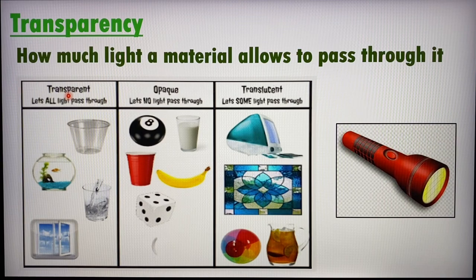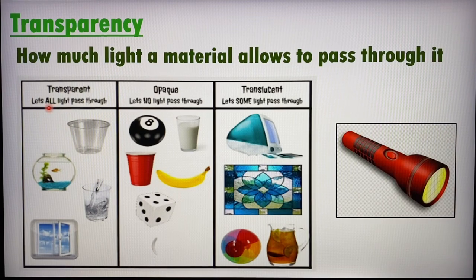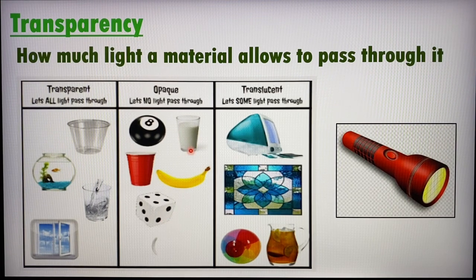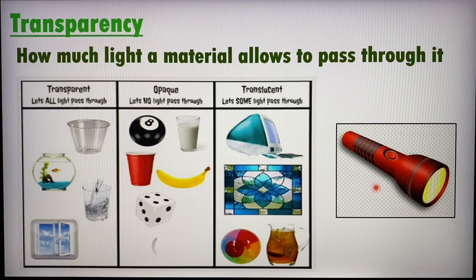Transparency is about how much light a material allows to pass through. There are three categories. Transparent objects, like plastic and glass, allow most light to pass through — though not all, as some light gets reflected. Opaque objects do not allow any light to pass through. Translucent objects, like frosted glass or frosted plastic, allow only some light to pass through. A torchlight is the best tool to shine through materials to see if light actually passes through.